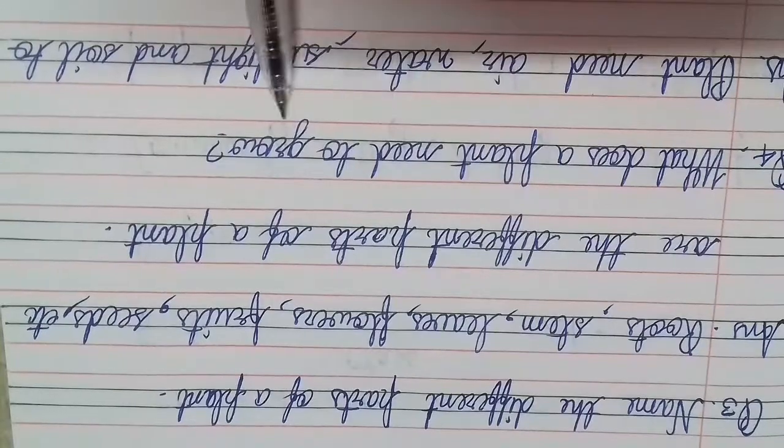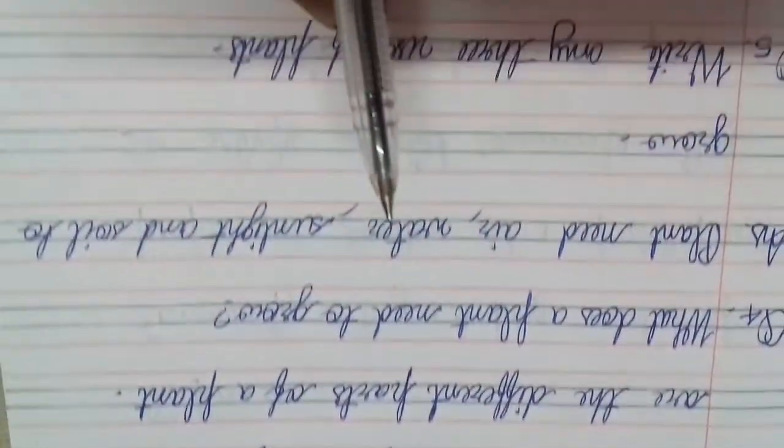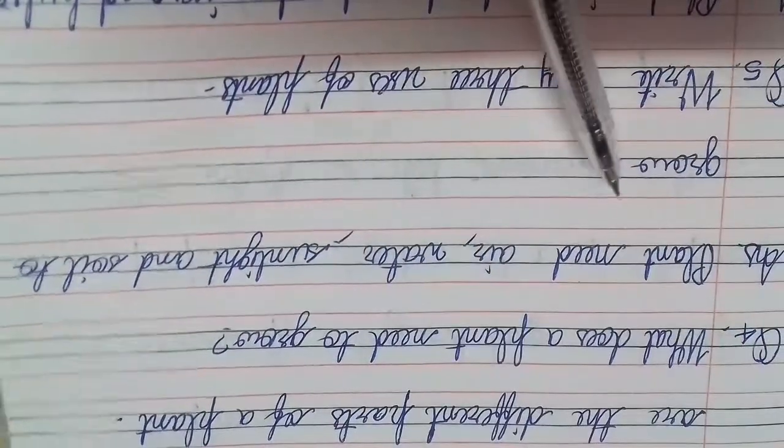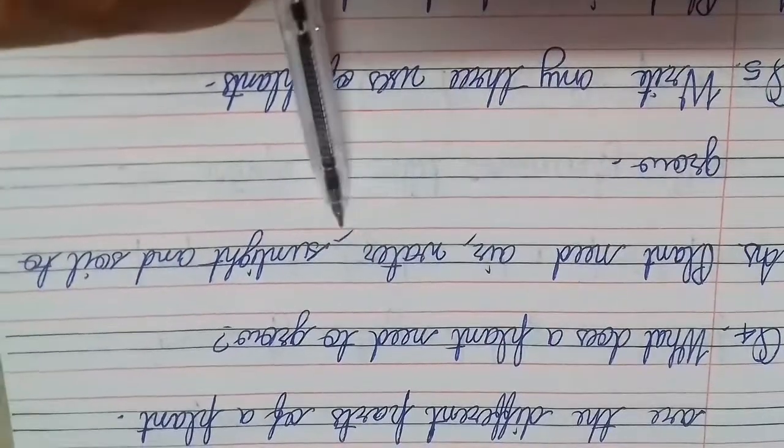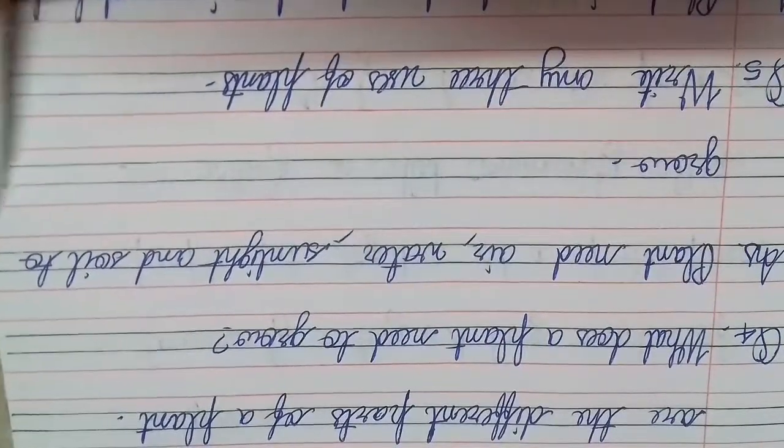Question four: What does a plant need to grow? Plants need air, water, sunlight, and soil to grow.